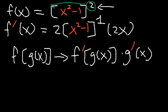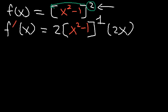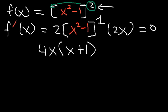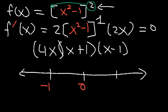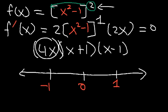Now set the first derivative equal to zero and factor completely. Combining 2 times 2x gives 4x, and (x² - 1) factors as (x+1)(x-1) by the difference of perfect squares. So f'(x) = 4x(x+1)(x-1) = 0, giving critical numbers x = -1, x = 0, and x = 1. Place these on the number line. Plugging in x = 2: (2-1), (2+1), and 4×2 are all positive, so f' is positive when x > 1.